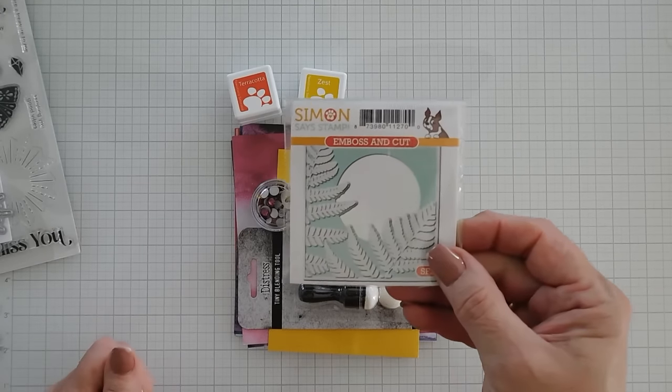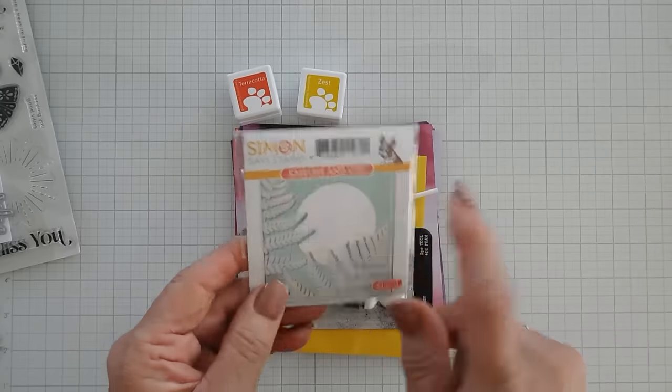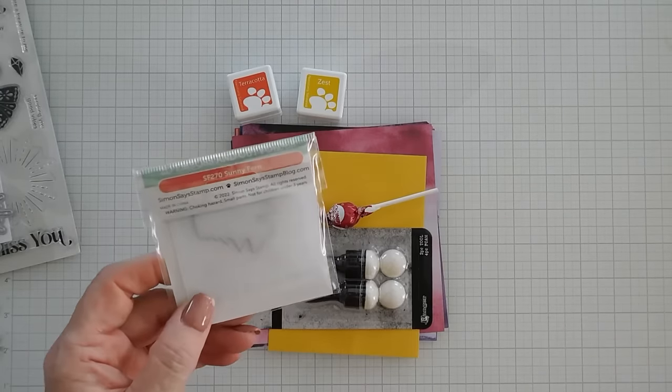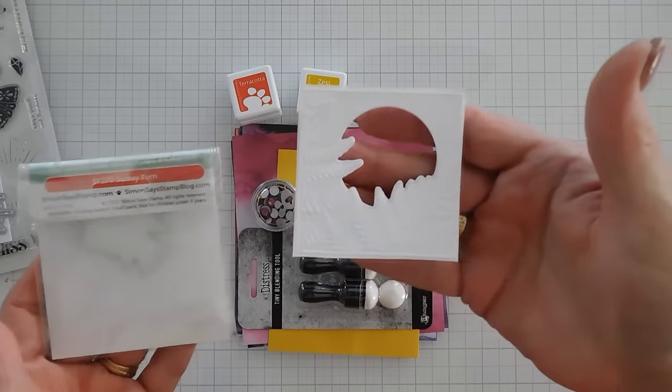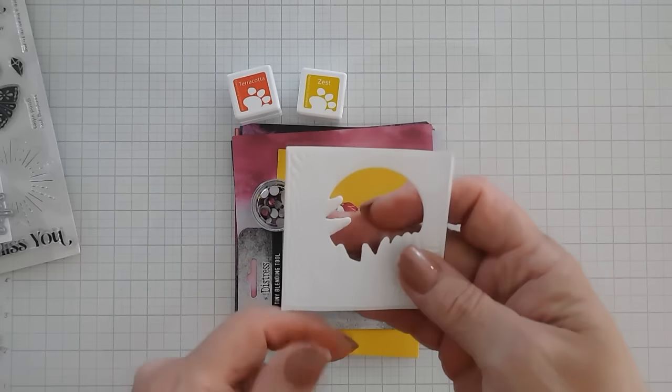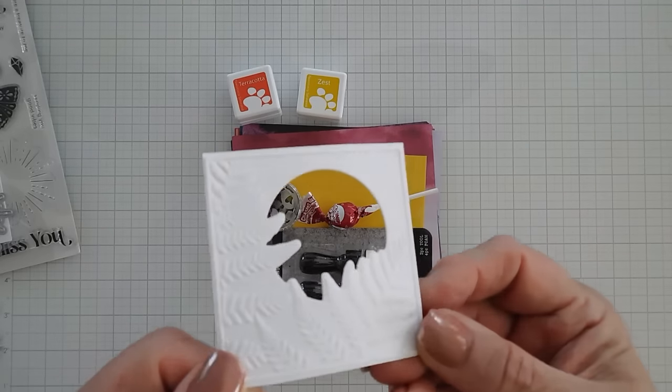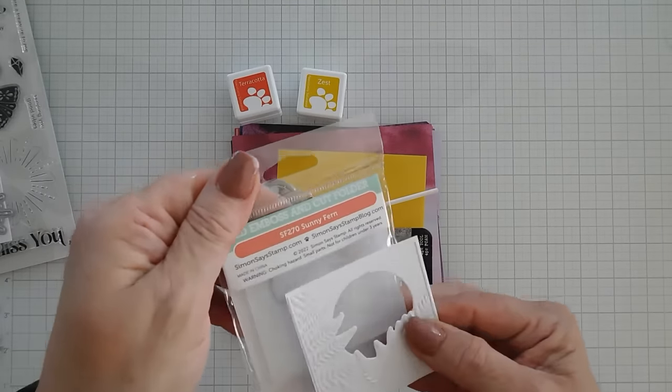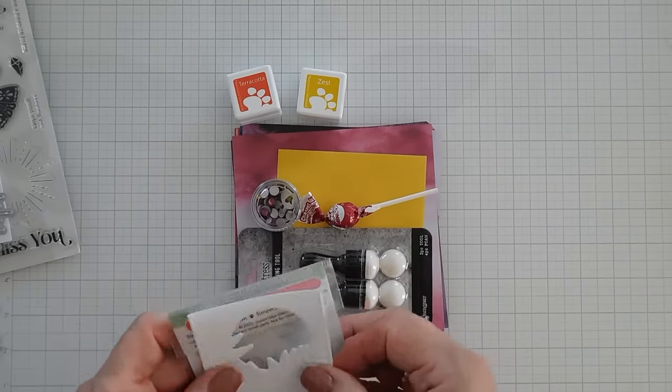We also get an emboss and cut folder. These are two and a half inches wide. I already cut mine out. I want to show you what it looked like. This is what it looks like cut out. So there is a window that cuts out with the embossed ferns. This is actually called Sunny Fern. So that's included in our kit.